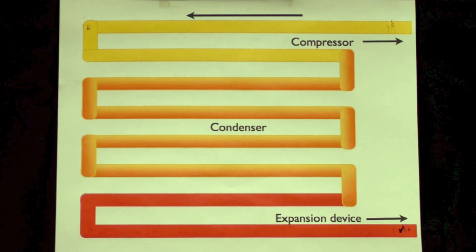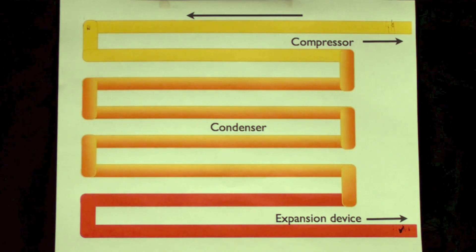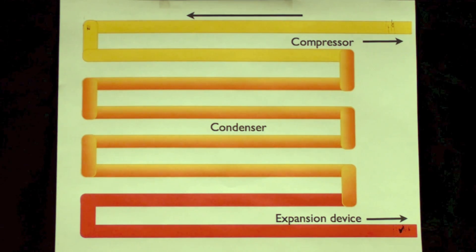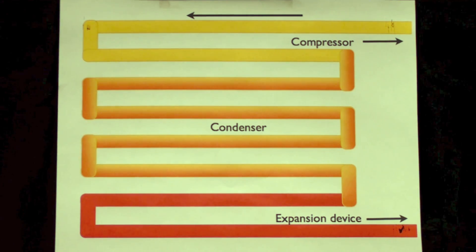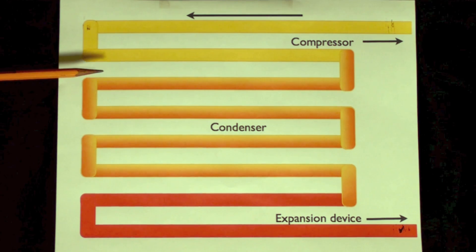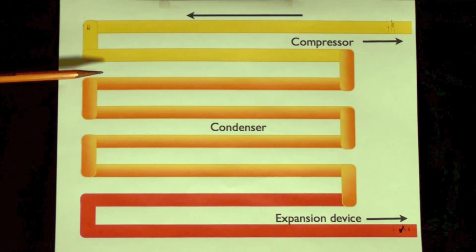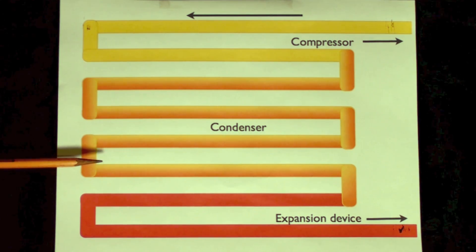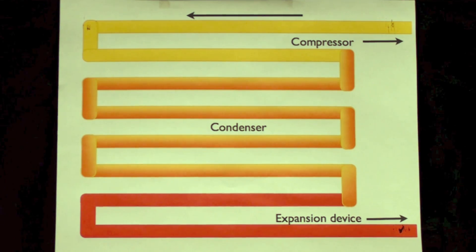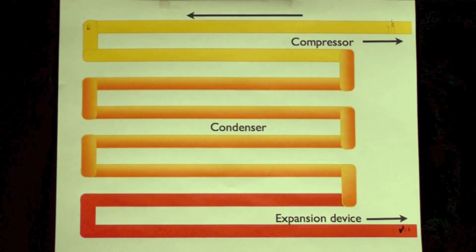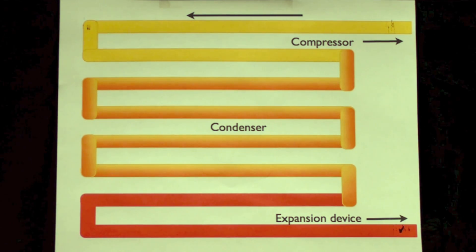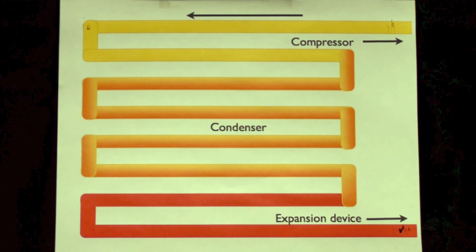That's the heat of compression. That's the heat energy that the refrigeration compressor used to compress the gas. So it has to get rid of that first, then it gets rid of all the heat that it absorbed in the evaporator, and then it subcools. So that's the condenser. Probably the next one we'll talk about will be the evaporator.